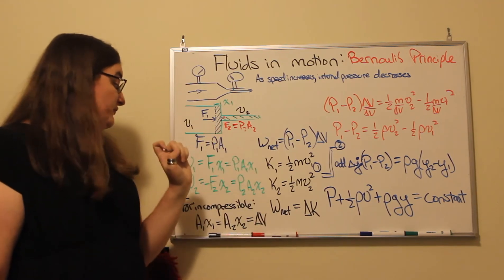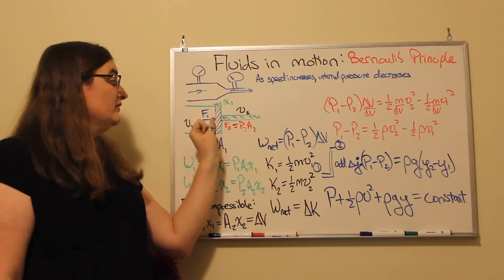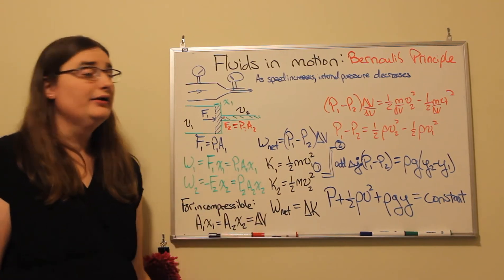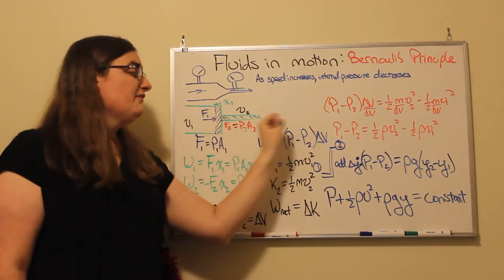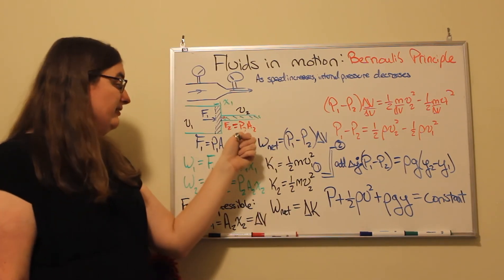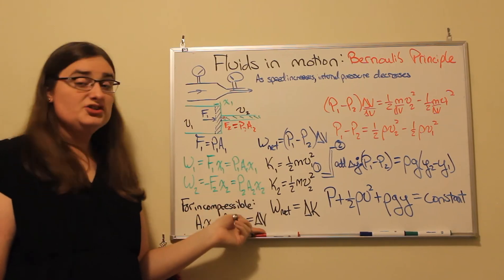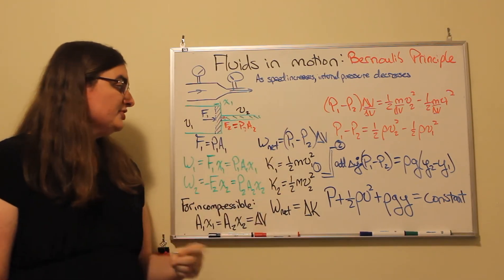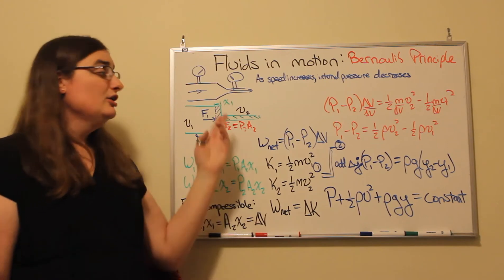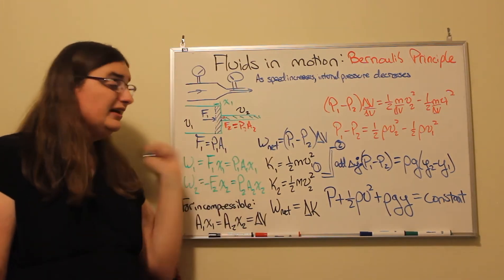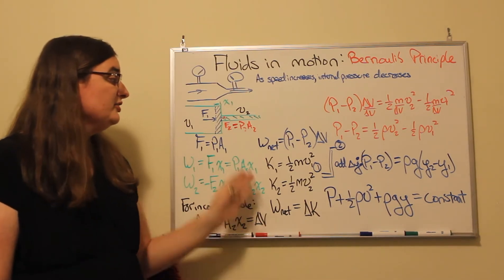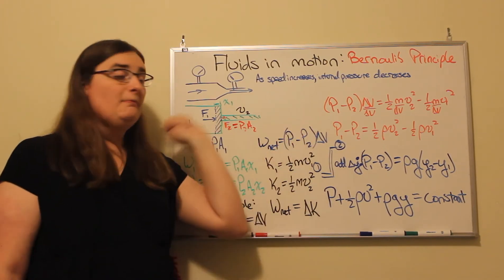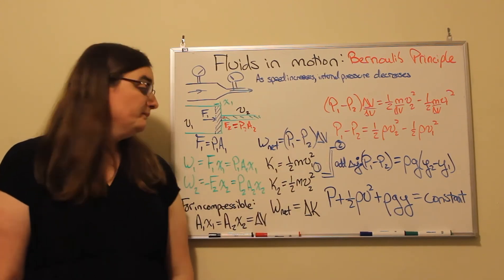For the case of an incompressible fluid, the volume of fluid over here would have to be exactly the same as the volume of fluid over there. If I have a short distance x1, I'm going to have a much larger distance x2, but area times distance is just volume. So the work done on side one pushing the fluid in is going to be the pressure on side one times my volume of fluid. The work done on side two pushing against it is minus the pressure on side two times my volume. So my net work is going to be the pressure on side one minus the pressure on side two, times my volume.